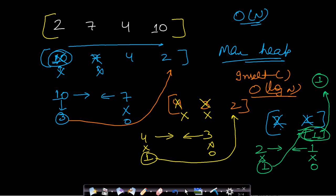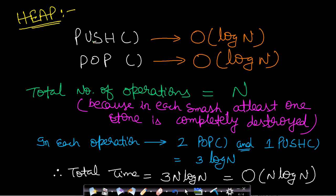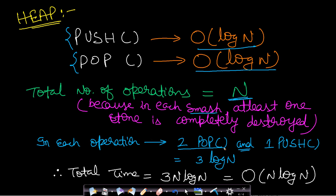Let us analyze the time complexity. Push and pop operations each take O(log n) time due to heapify. In each smash, at least one stone is completely destroyed, so we have at most n operations total. Each operation involves two pops and at most one push — that is 3 log n per operation. With at most n operations, total time is O(3n log n), which is amortized to O(n log n).